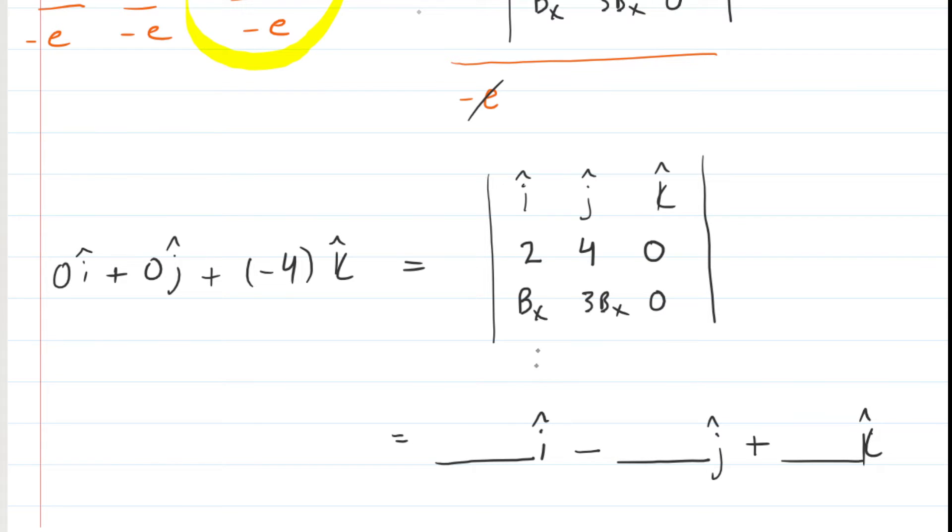So now what do we do? Well, to fill in this little space for i-hat, what you're going to do is actually cover up the i-hat column like this. And then we're going to do what's called a determinant, which is basically a cross-multiplication procedure. You're going to do 4 times 0, which is 0, and then 0 times 3bx, which is also 0. And then you would subtract those outcomes. So in other words, you would have 0 from the first cross-multiplication subtracted by 0 from the second cross-multiplication. But, of course, that's just 0. So we'll fill in a 0 into that blank space right there.